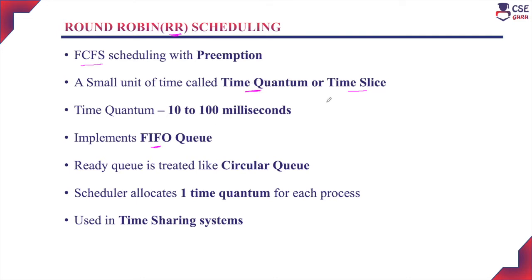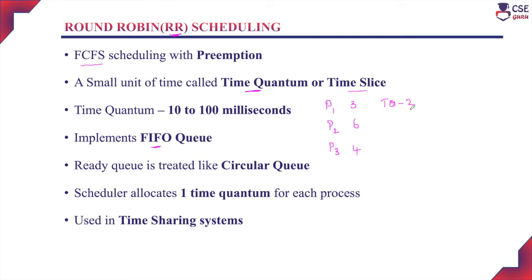For example, consider three processes: P1, P2, and P3. Process P1 has a CPU burst time of 3 milliseconds, P2 is 6 milliseconds, and P3 is 4 milliseconds. If the time quantum is 2 milliseconds, each process will execute with the CPU for only 2 milliseconds and then leave the CPU for the next process in the job queue.